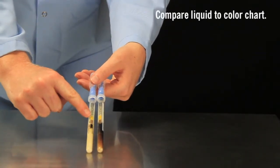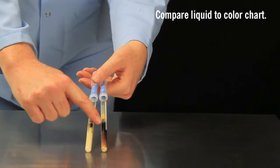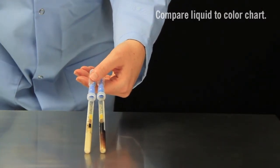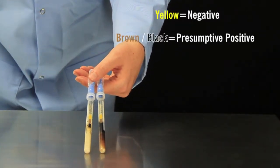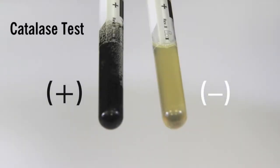Compare the color of the liquid to the printed chart on the tube label. If the color of the media has changed to brown or black within 48 hours, the sample is considered presumptive positive for Listeria species. For confirmation of positive results, you may perform a catalase test using hydrogen peroxide.